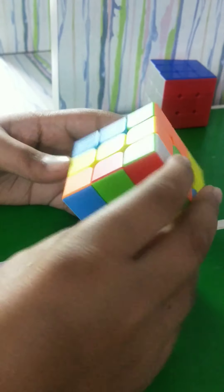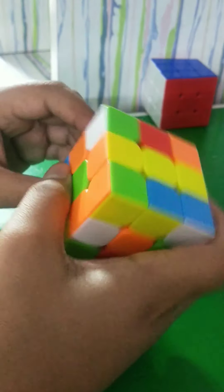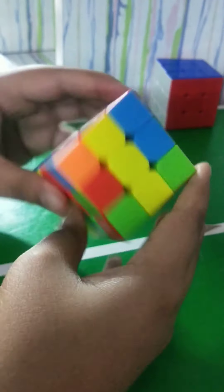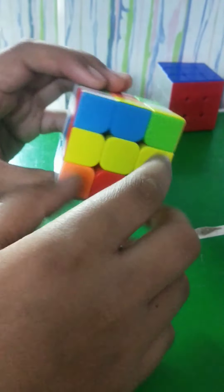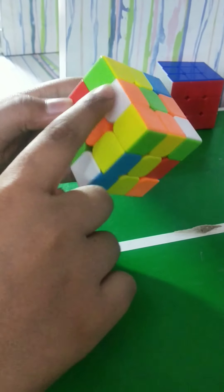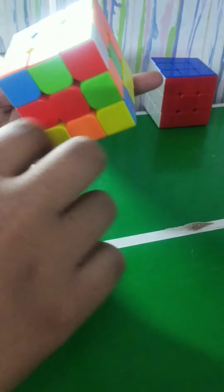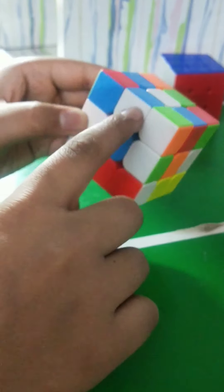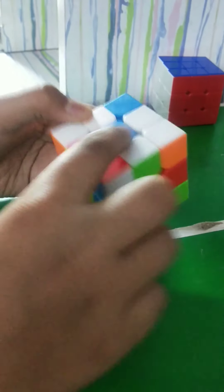So first step, here we've got a shuffled cube. First, we have to make a white daisy. We have to find the white middle edge pieces. So here is one and the other three, and we have to rotate it to the yellow center.